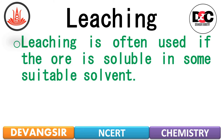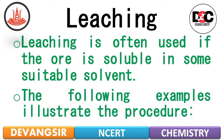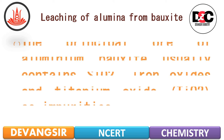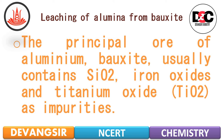Leaching is often used if the ore is soluble in some suitable solvent. The following examples illustrate the procedure. The first one is the Leaching of Alumina from Bauxite. The principal ore of aluminium, Bauxite, usually contains SiO2, iron oxide and titanium oxide as impurities.